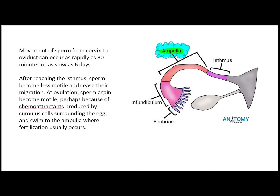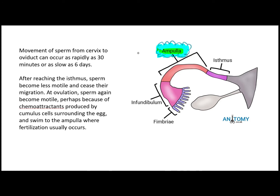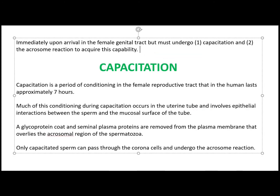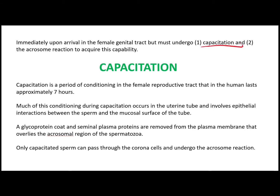As sperms and ovum reach the oviducts, they undergo fertilization. The main site of fertilization is the ampulla. Sperms must first develop the capability to undergo fertilization, so they undergo capacitation and acrosomal reaction to acquire this capability.